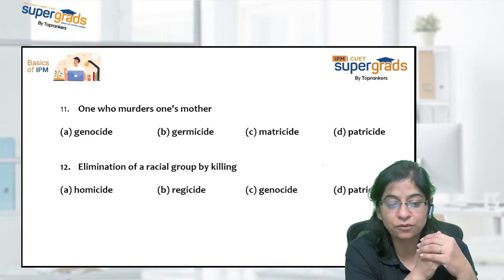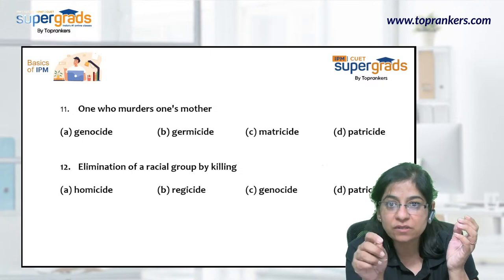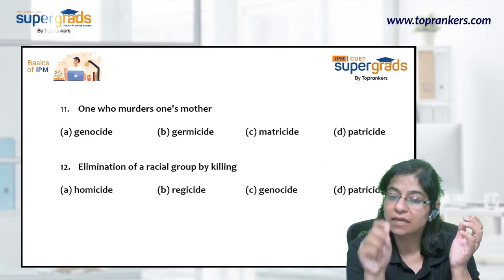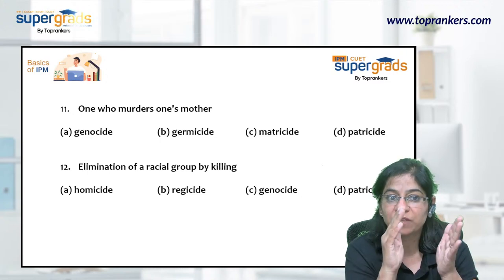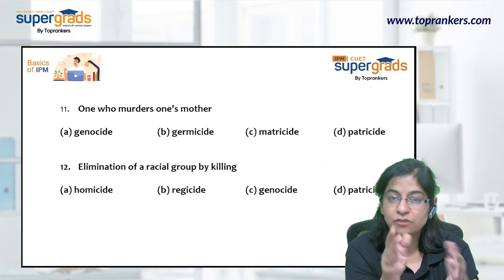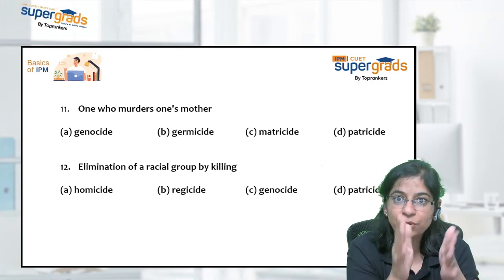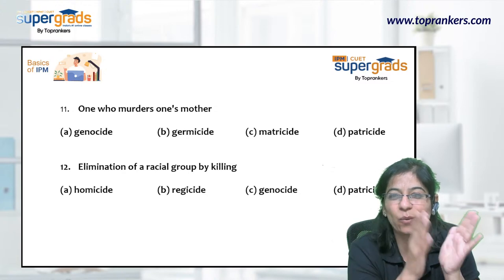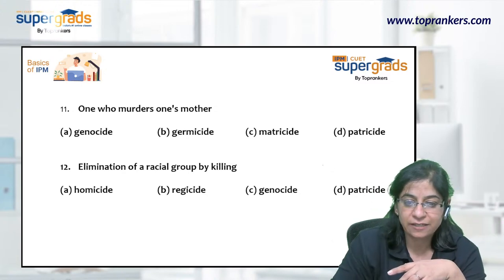The next question asks about 'Elimination of a racial group by killing.' Homicide means killing a person — murder. Regicide, as already discussed, is killing a king. Genocide is the answer — eliminating members of a particular race or community. Patricide is killing one's own father.